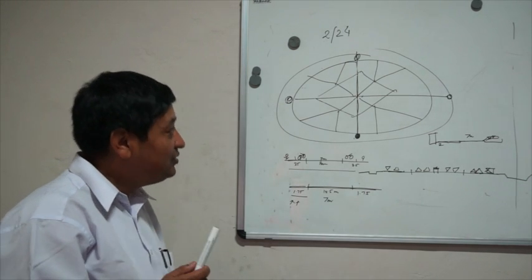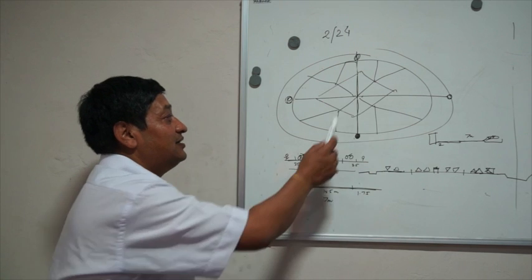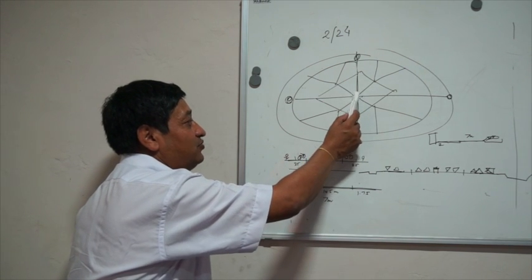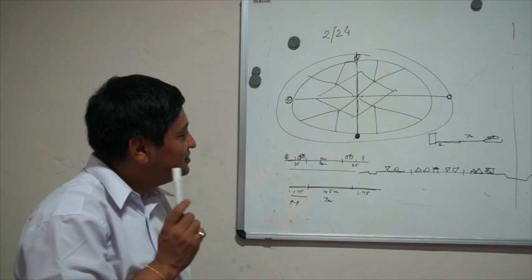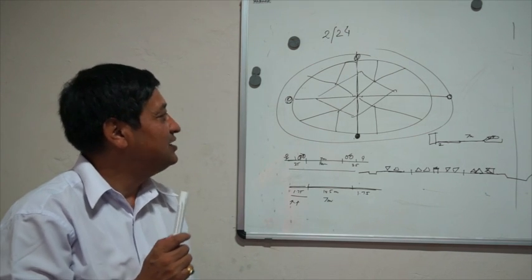One thing we need to address is this CBD area where we have lots of vehicles and lots of cycles traveling. This CBD area needs to be addressed by complementing different types of modes.